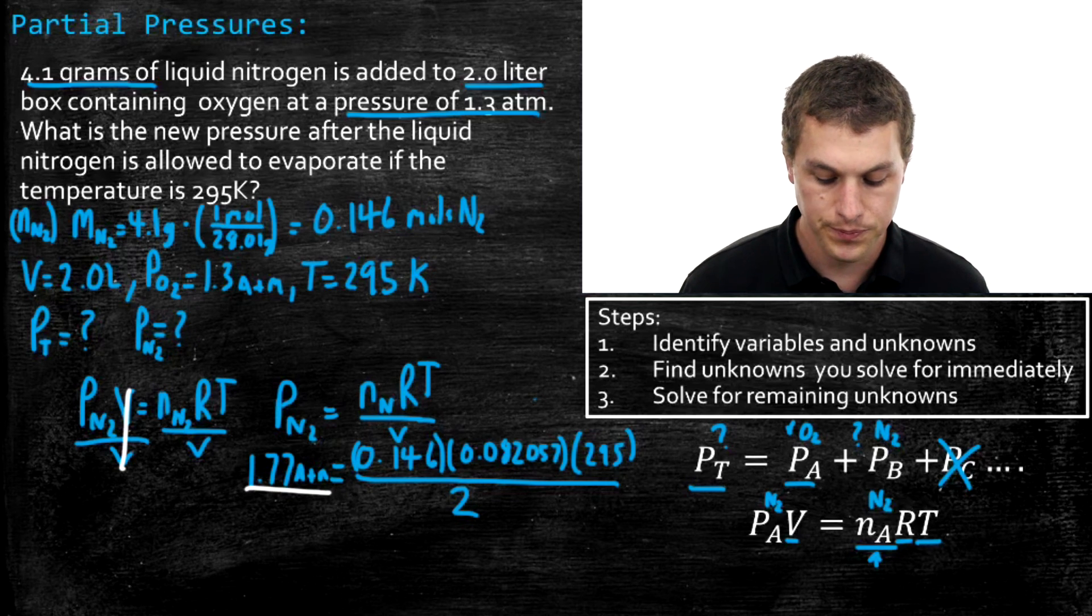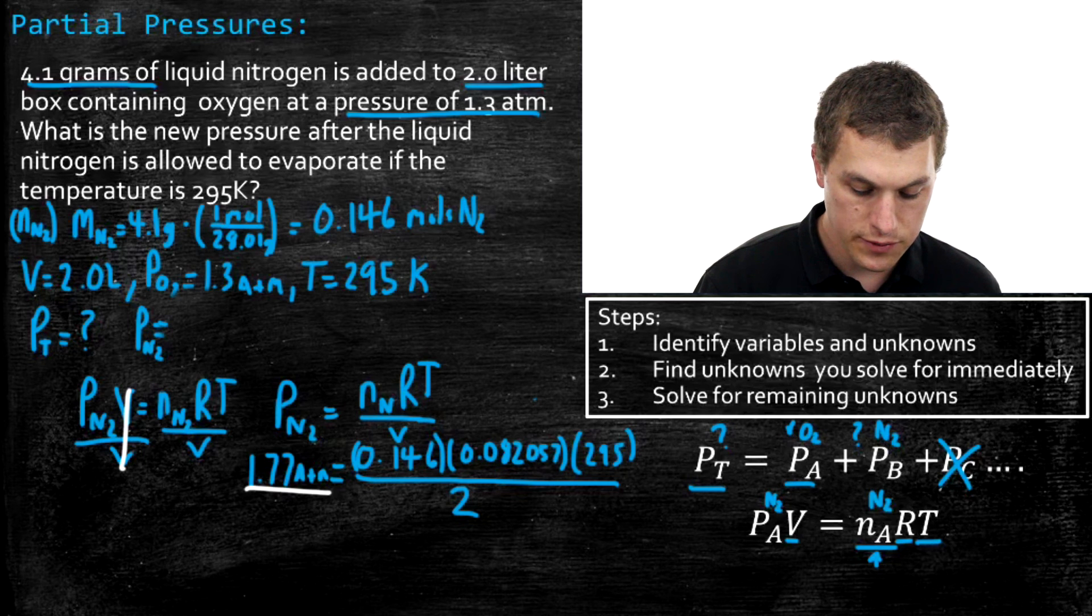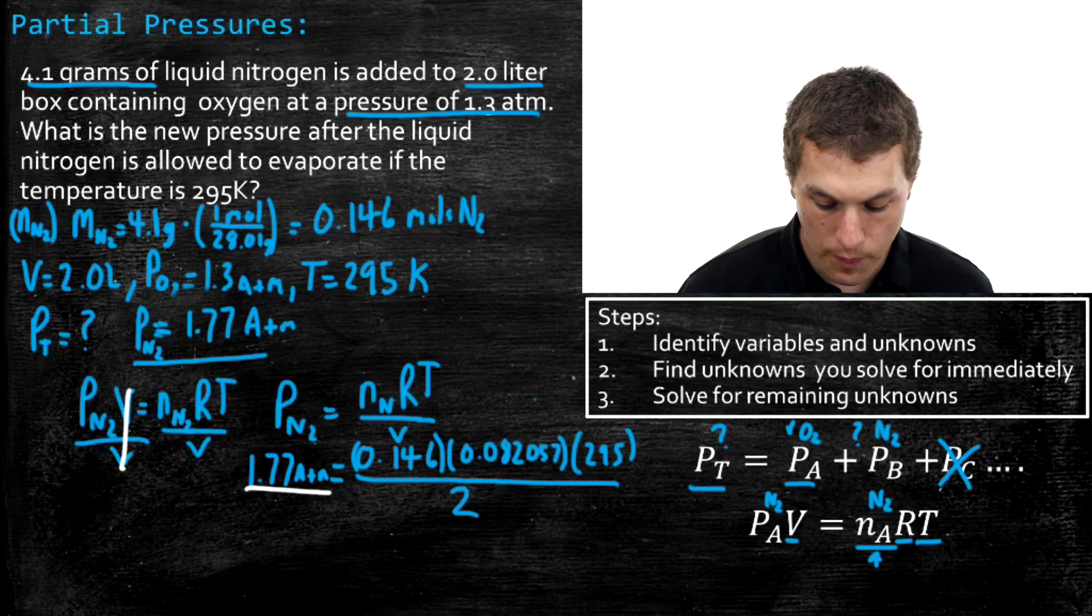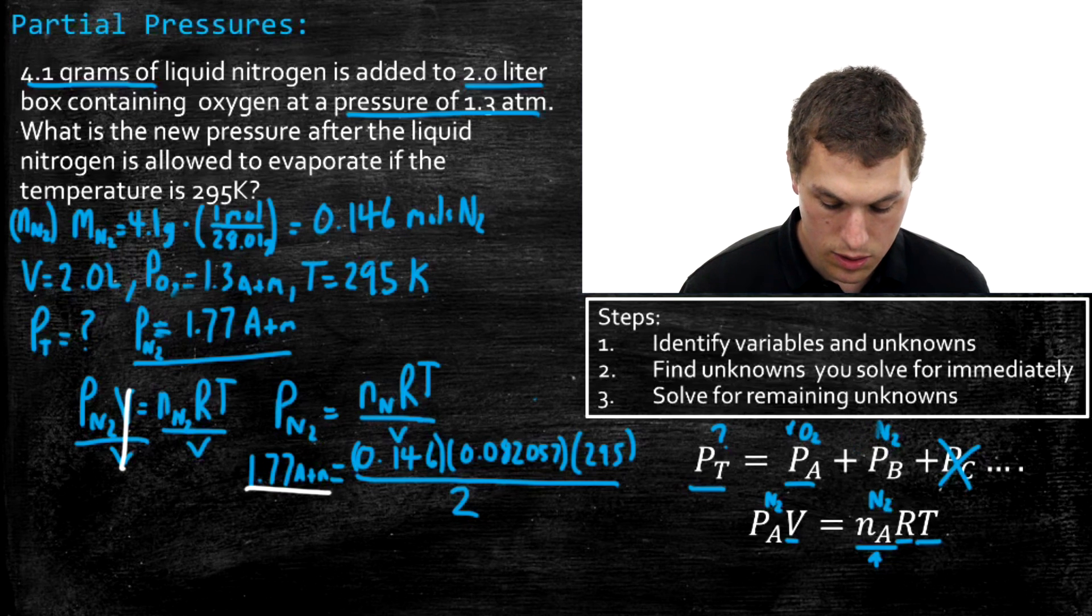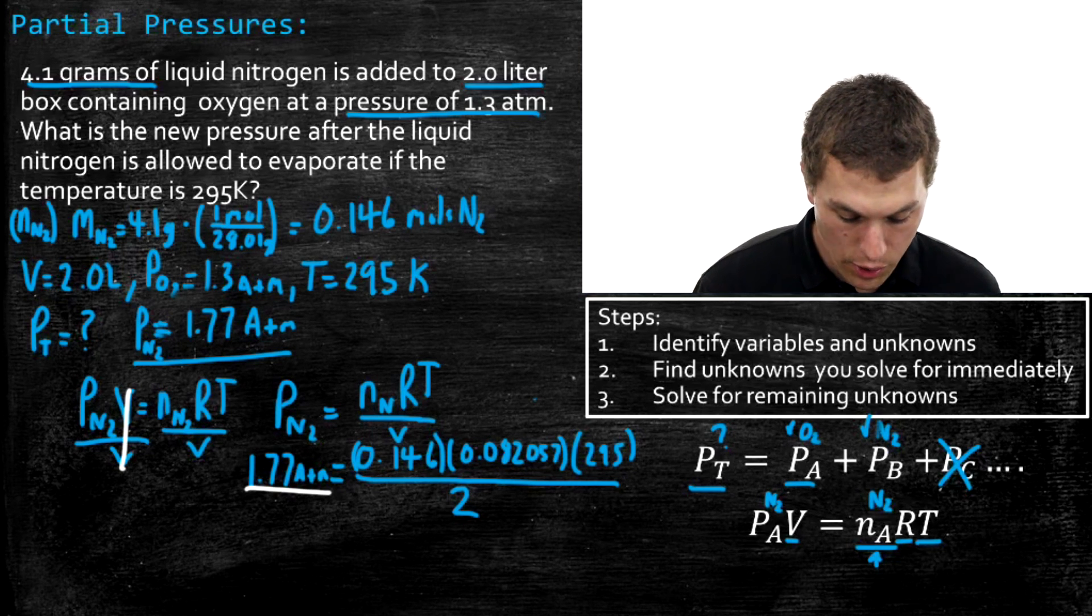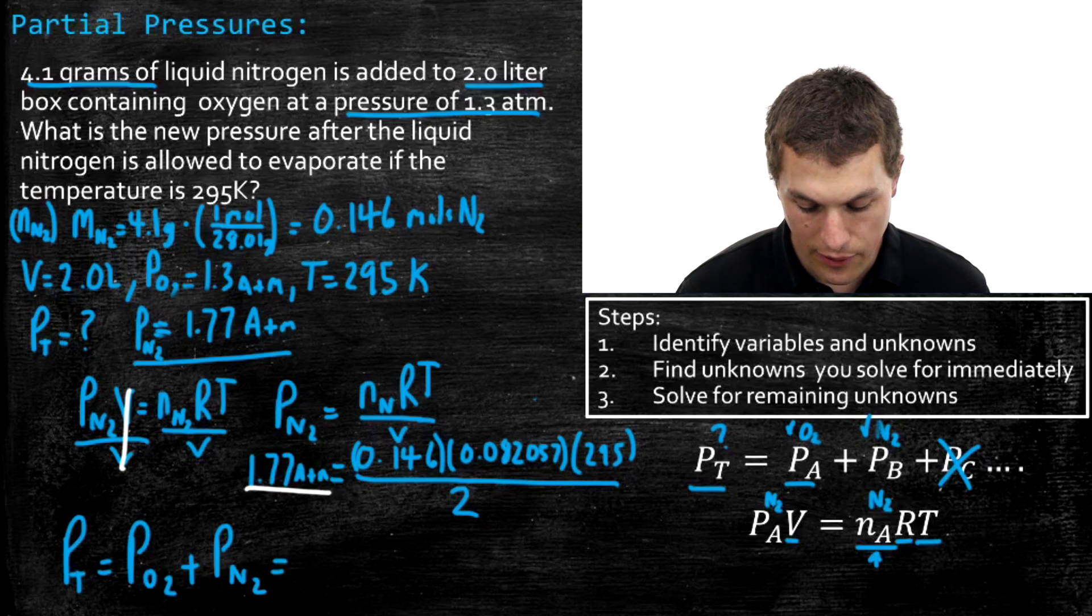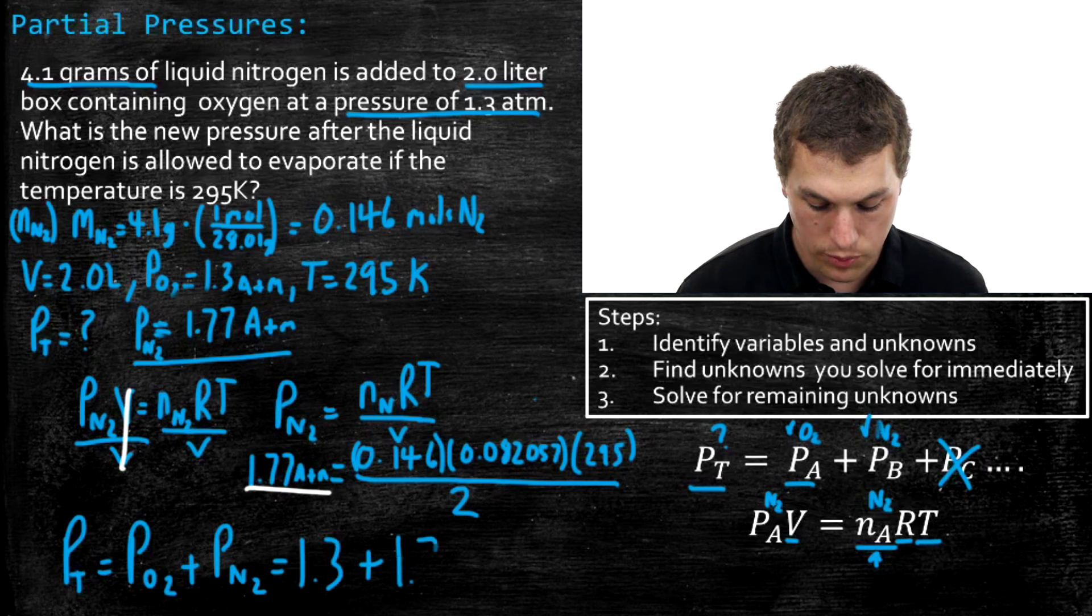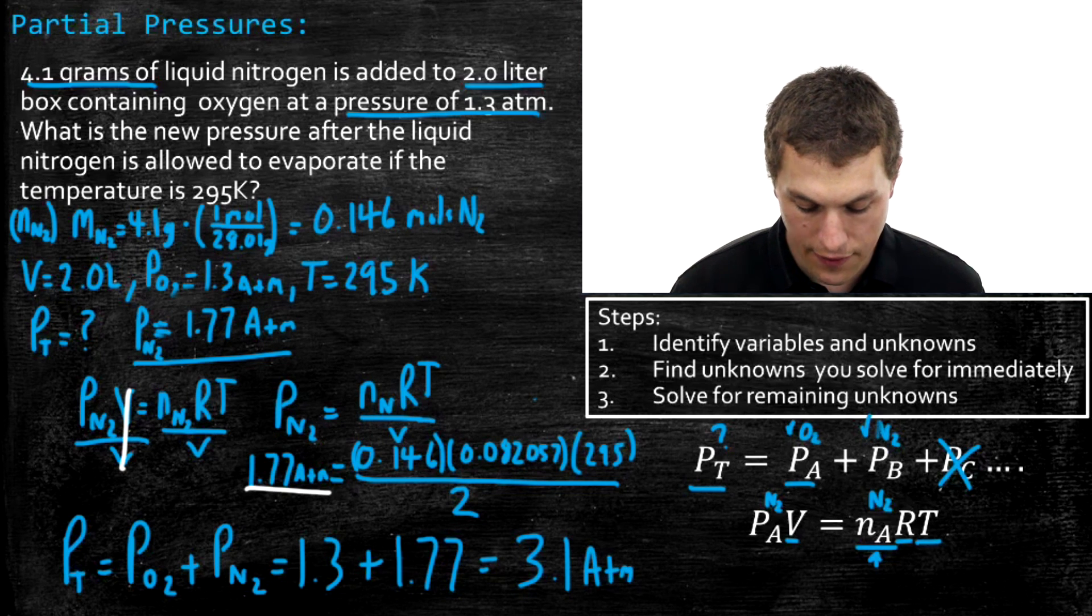So that's my partial pressure from nitrogen that I just solved. So now I have this variable up here that it was a question mark, and now I know that the partial pressure of nitrogen is 1.77 ATMs. And now when I go back to my equation where I used to have two unknowns, I now only have one. Now I know that my partial pressure of nitrogen is 1.77. And I also know my partial pressure of oxygen. So that means I have all the information I need to calculate my total pressure. I know that my pressure total is equal to the partial pressure of oxygen, plus the partial pressure of nitrogen. And now I have both of those. The partial pressure of oxygen, which I already identified at the beginning, is 1.3. And the partial pressure of nitrogen I just calculated to be 1.77. And when I add those together and take into account sig figs, I get my new total pressure of 3.1 ATMs. And that's my pressure total.